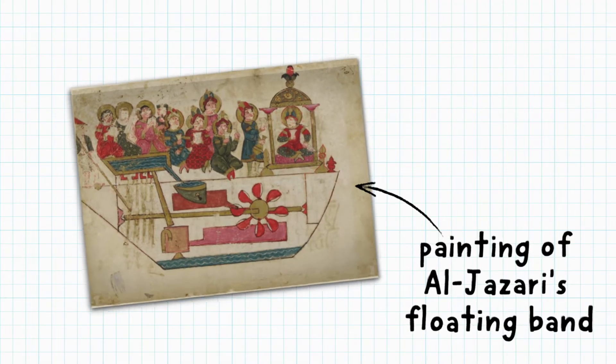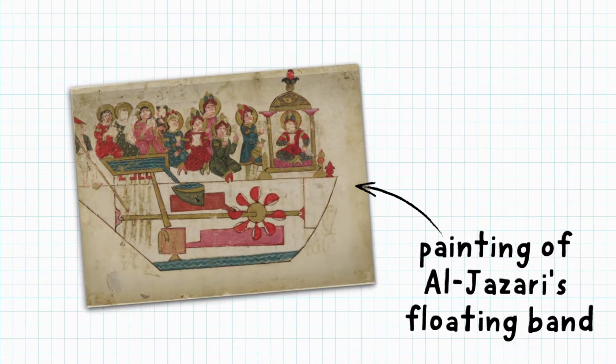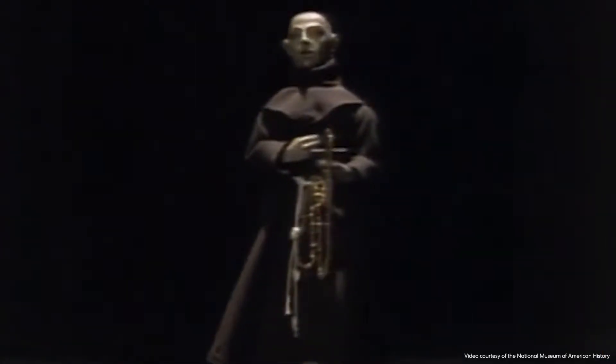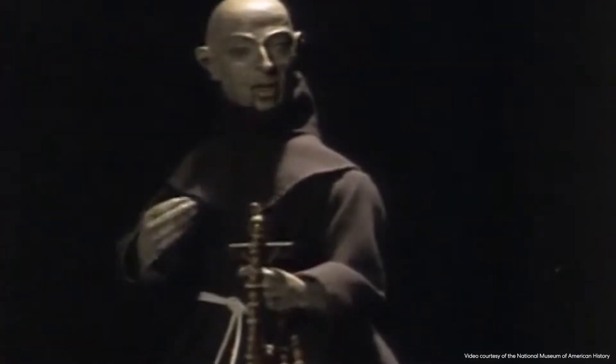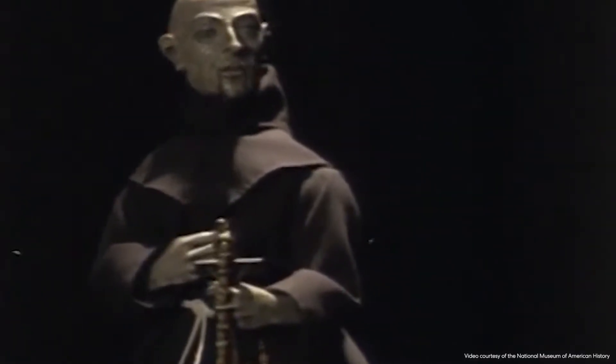The automatons' musicians moved their bodies during each song they seemingly played. As automatons evolved, inventors gave them more human-like characteristics. This wooden mechanical monk was believed to have been built in the 16th century. When its key is cranked, it appears to mouth prayers and kisses a cross.